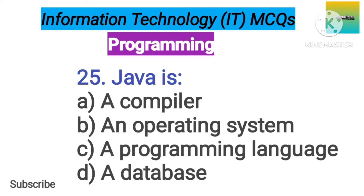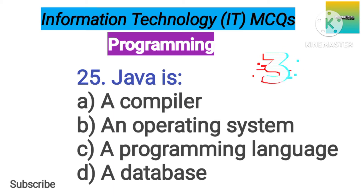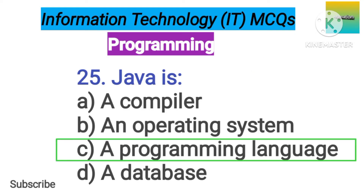Number 25. Java is option A: A compiler. B: An operating system. C: A programming language. D: A database. The correct answer is option C, a programming language.